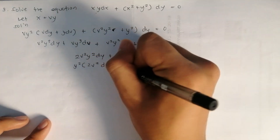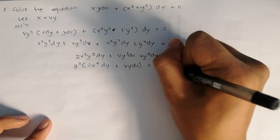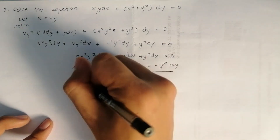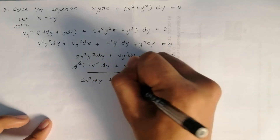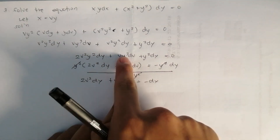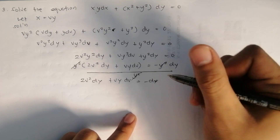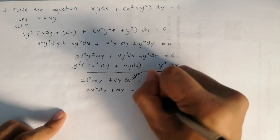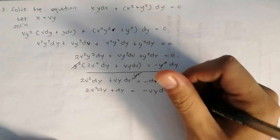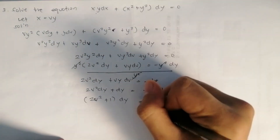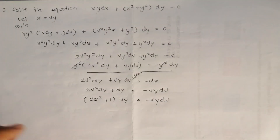Transposing and factoring: y²(2v² dy plus vy dv) equals negative y² dy. Dividing both sides by y²: 2v² dy plus vy dv equals negative dy. Rearranging: 2v² dy plus dy equals negative vy dv, then factoring: (2v² plus 1) dy equals negative vy dv.